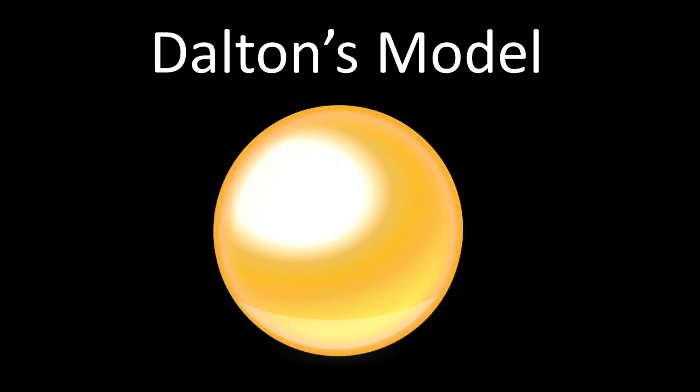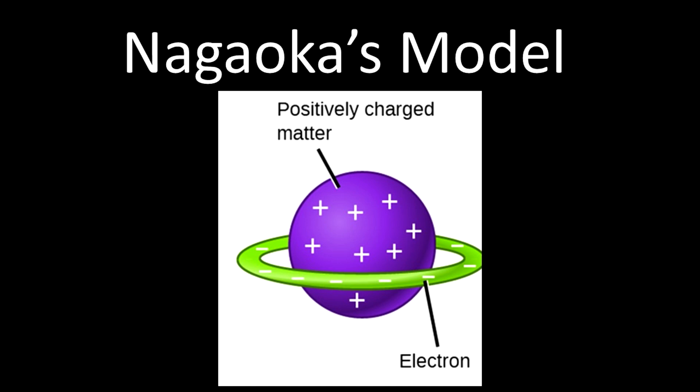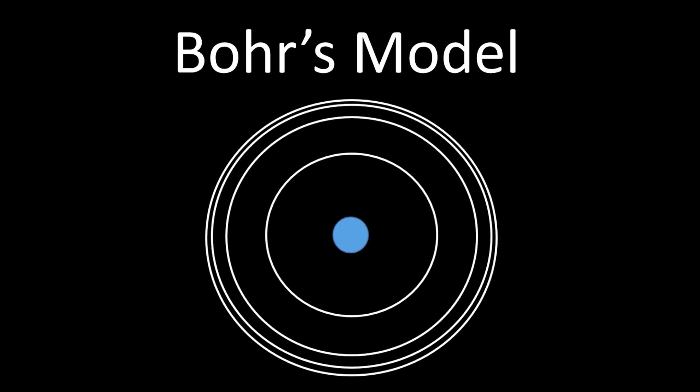Let's review where we've been. We started with Dalton's model of the atom, which was a solid sphere with no parts — basically the smallest little chunk of gold you can have with no internal structure. When J.J. Thomson discovered the electron, we figured that wasn't quite right. Nagaoka's planetary model was suggested, then confirmed by Rutherford's gold foil experiment, which showed a positively charged center with electrons in a ring. Then Bohr came along and proposed a planetary model with named rings, figured out their energies, and showed how the atom interacted with light. We still use Bohr's planetary model today to think about its interaction with light because it's nice and simple.